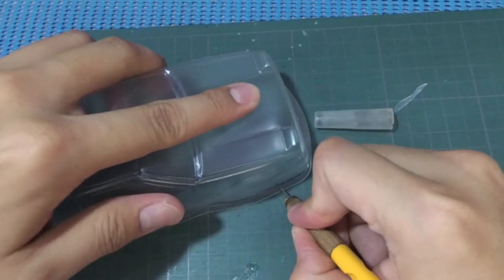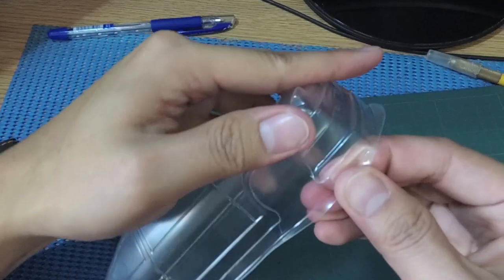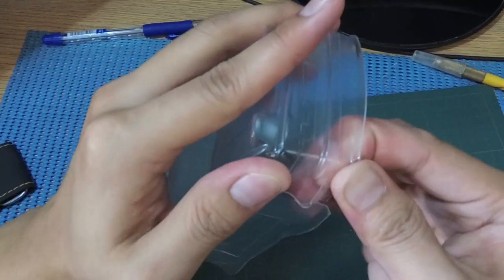As I said earlier, once I finish scoring, I cut an opening, fold it, and tear it off.